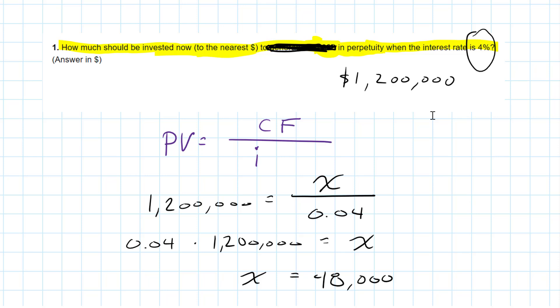And x works back to the $48,000 we had before. So that's a basic example of rearranging a formula to solve for an unknown.